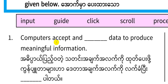Question 1: Computers accept and blank data to produce meaningful information. Let's take a look at the sentence. Data — to produce meaningful information.